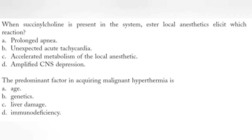These will be today's last two questions — 11th and 12th. When succinylcholine is present in the system, ester local anesthetics elicit which reaction? Option A, prolonged apnea. Option B, unexpected acute tachycardia. Option C, accelerated metabolism of the local anesthetic. Option D, amplified CNS depression. Since succinylcholine and ester local anesthetics share the same metabolic pathway, there will be prolonged apnea — option A.